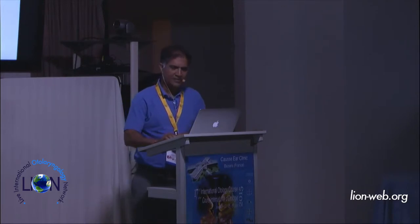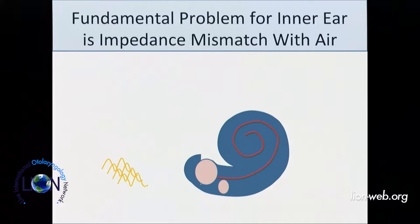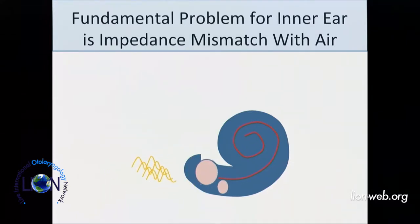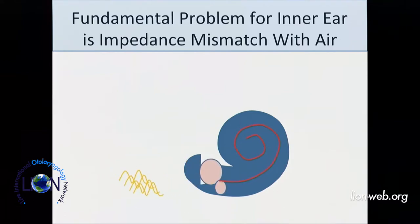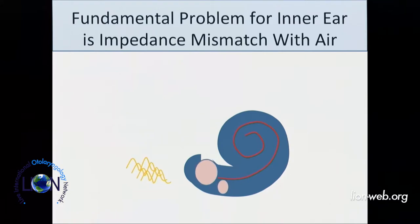So let's go back to the fundamental problem. The fundamental problem is that there's an impedance mismatch of air with the inner ear. We're trying to drive the impedance load of the cochlear fluids with the impedance of air — we just can't do it because it's going to bounce off. That energy just bounces off the cochlea. So we have to try and overcome that impedance mismatch. That's the whole point of the middle ear.